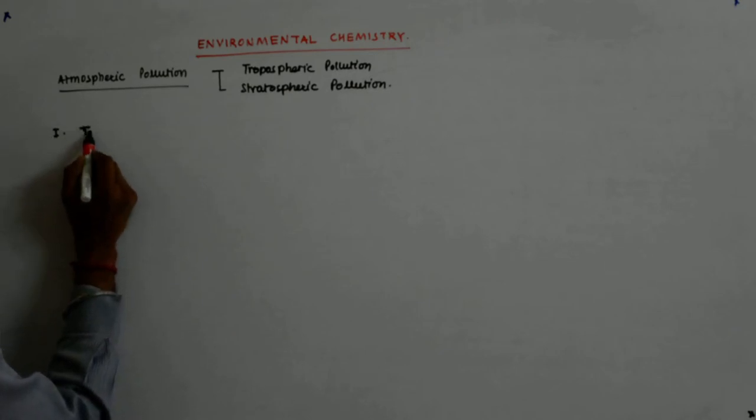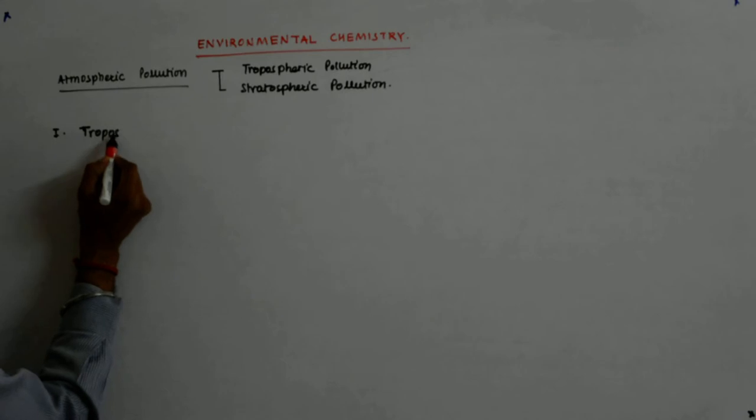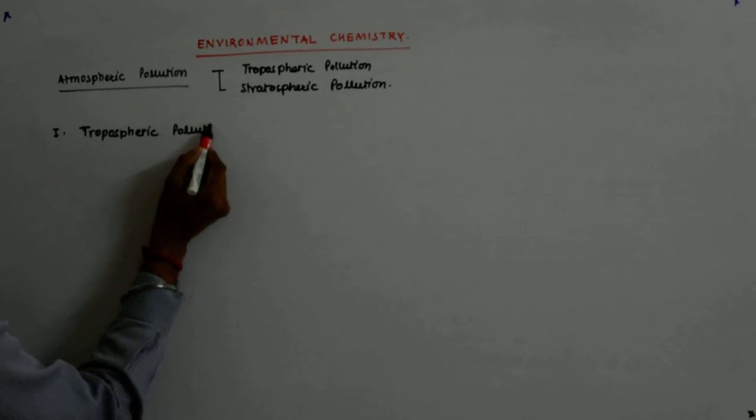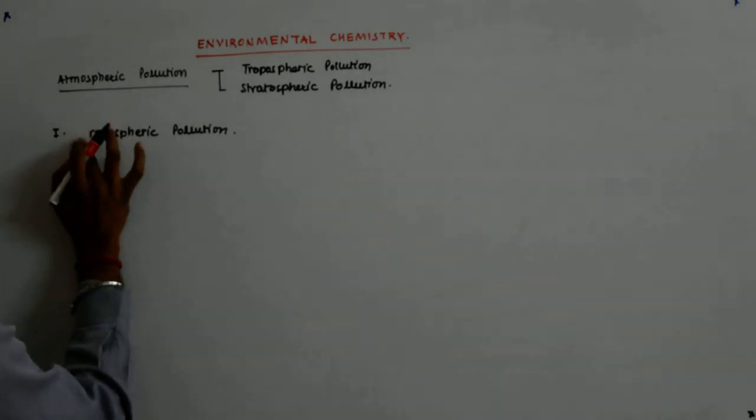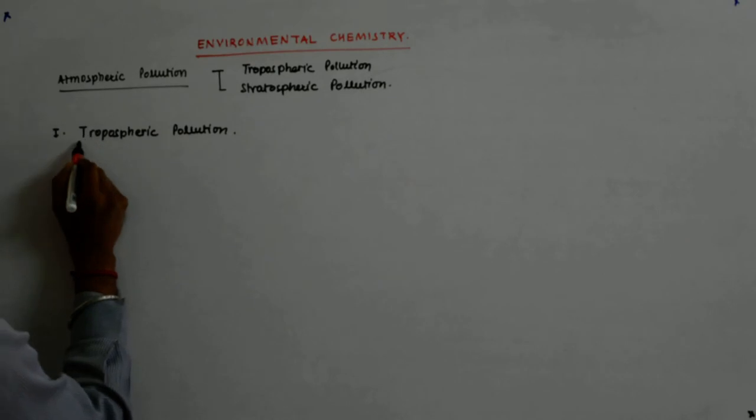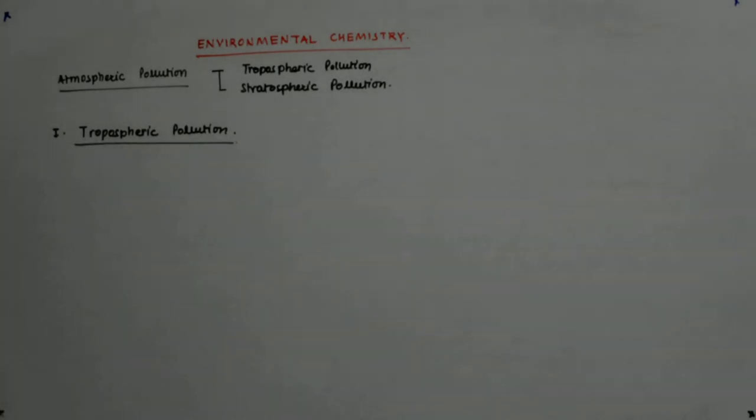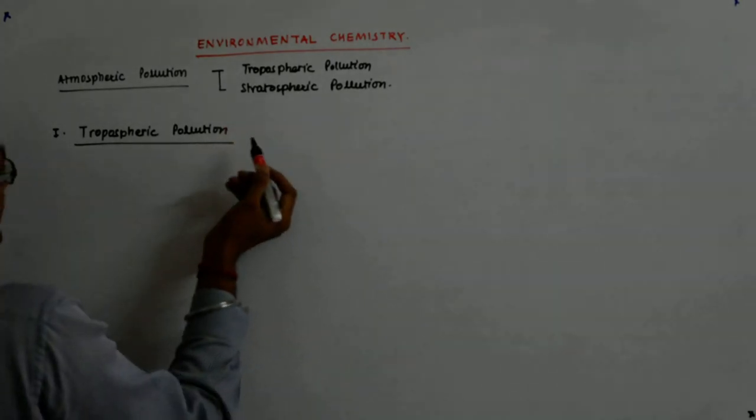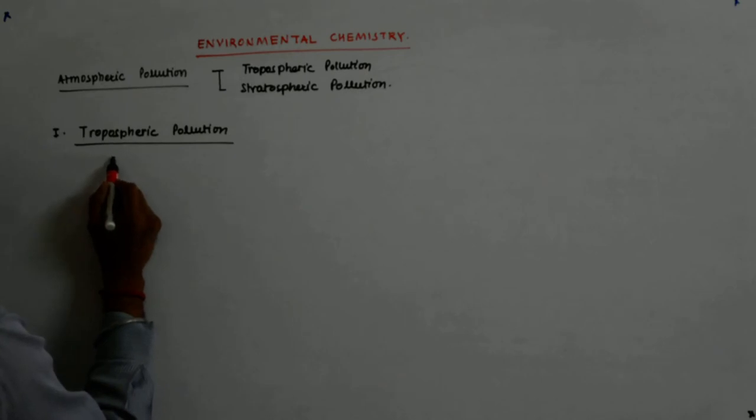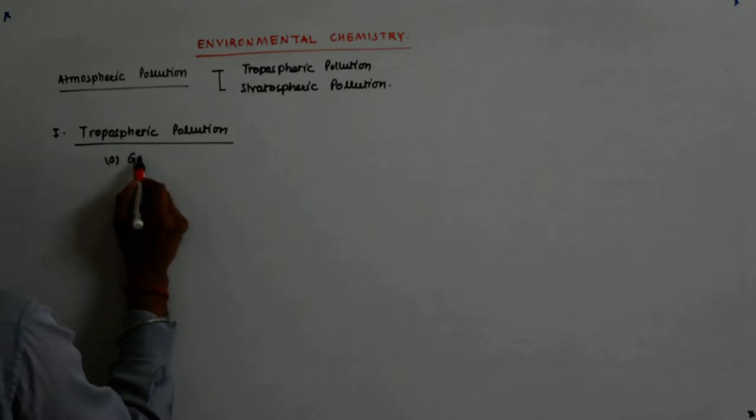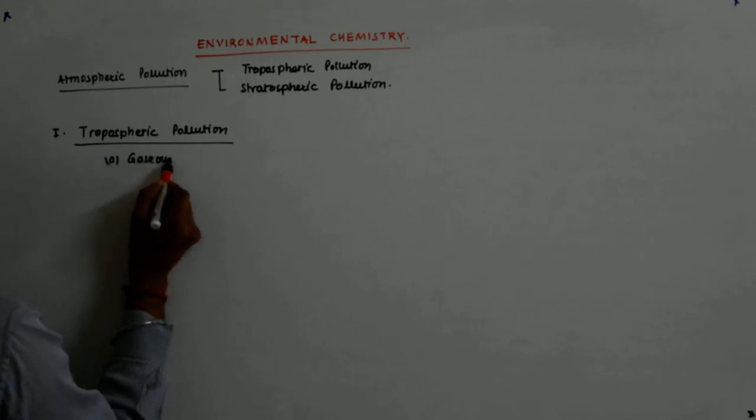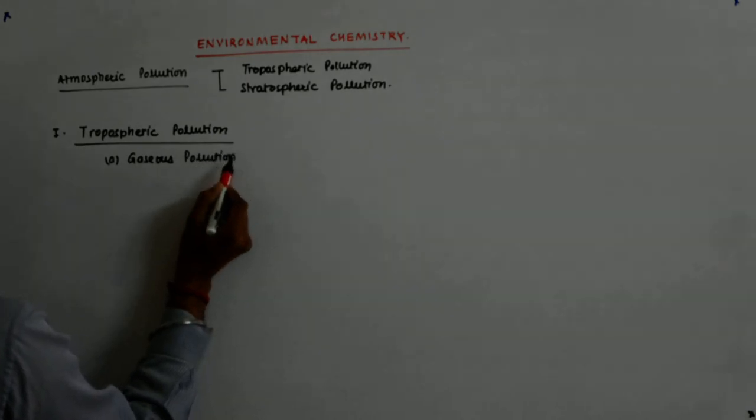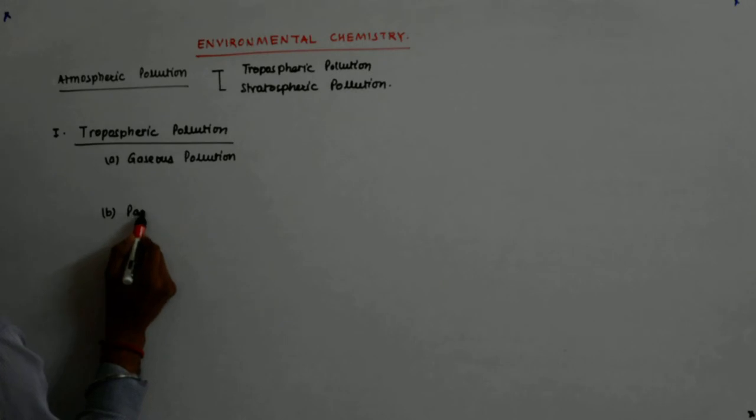Now we come to tropospheric pollution. This has two types: gaseous pollution and particulate pollution.